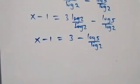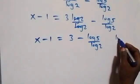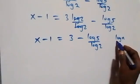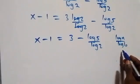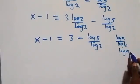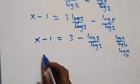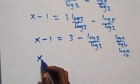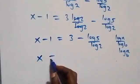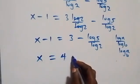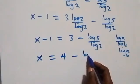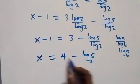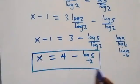Using the change of base formula — log a over log b is the same as log a to base b — log five over log two becomes log five to base two. So x minus one equals three minus log₂5. Taking minus one to the right as plus one: x equals three plus one, that is four, minus log five base two. So the solution is x equals four minus log₂5.